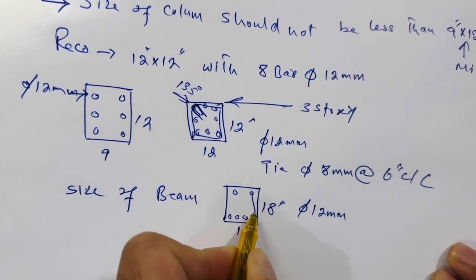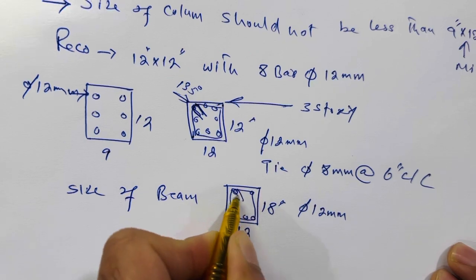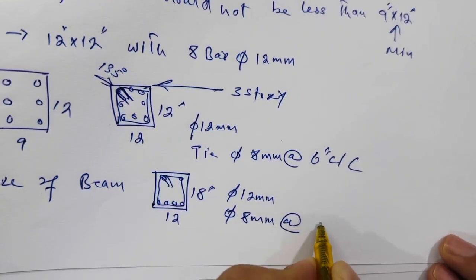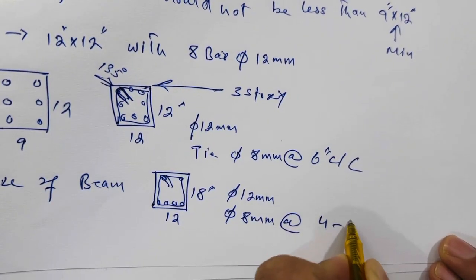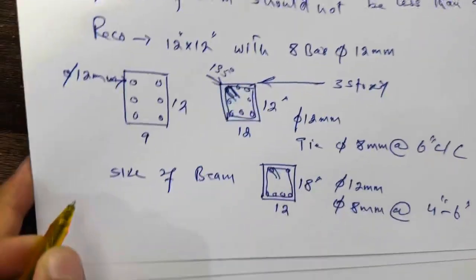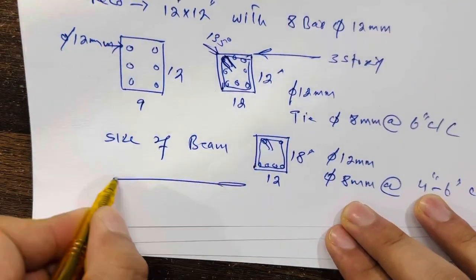Next, you can see the stirrups. The diameter should be 8 millimeter with the spacing of four to six inches center to center. How four to six inches? Let me make its long section.